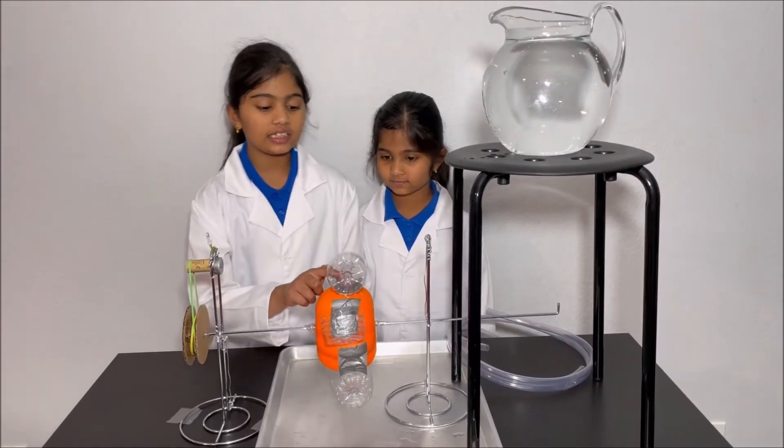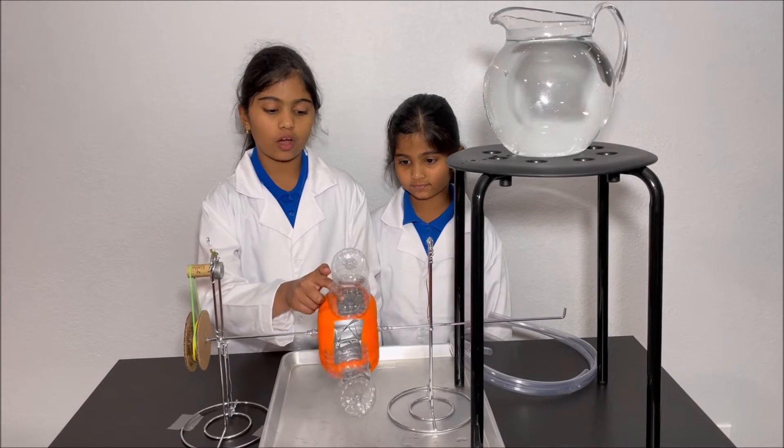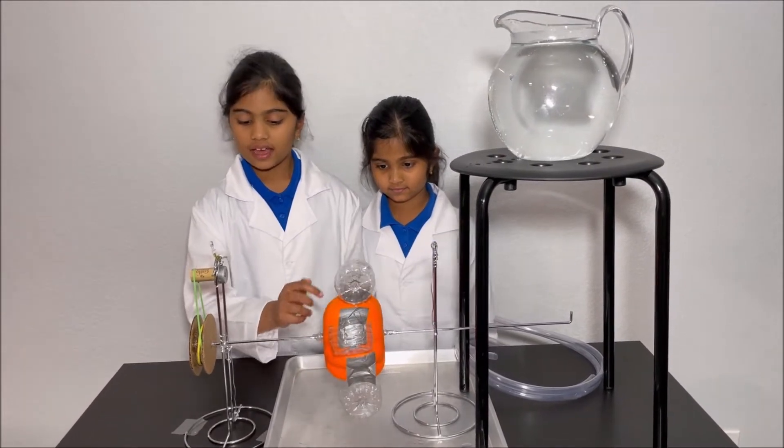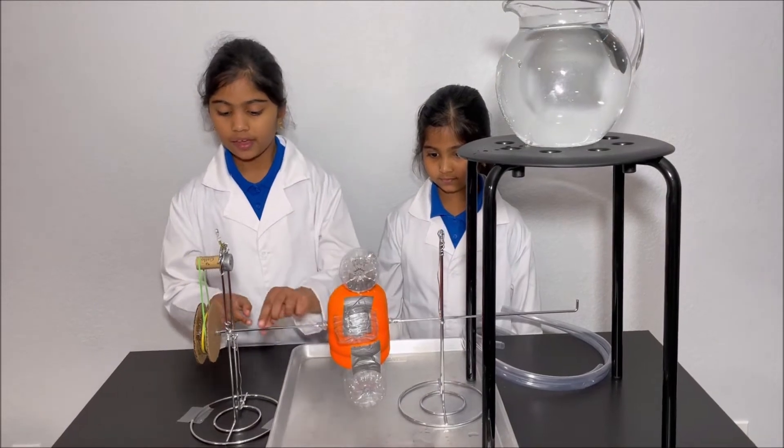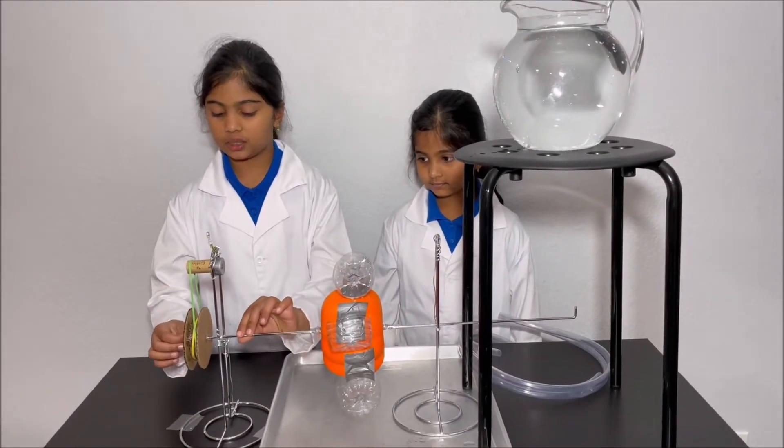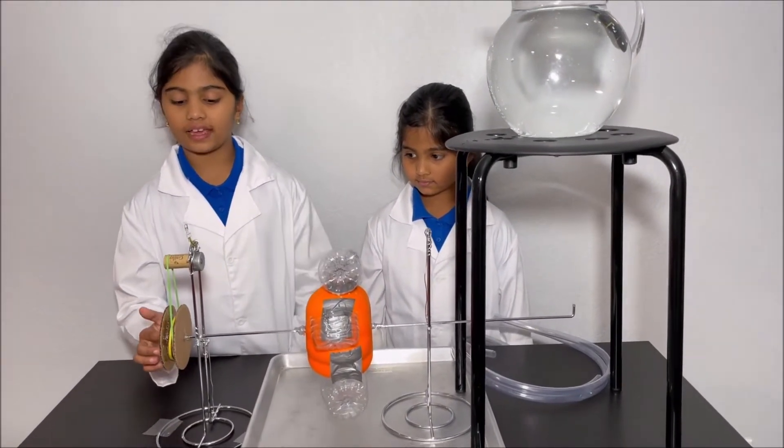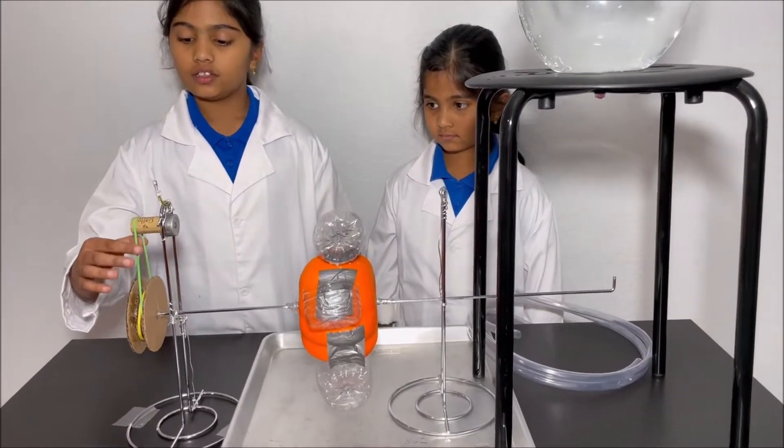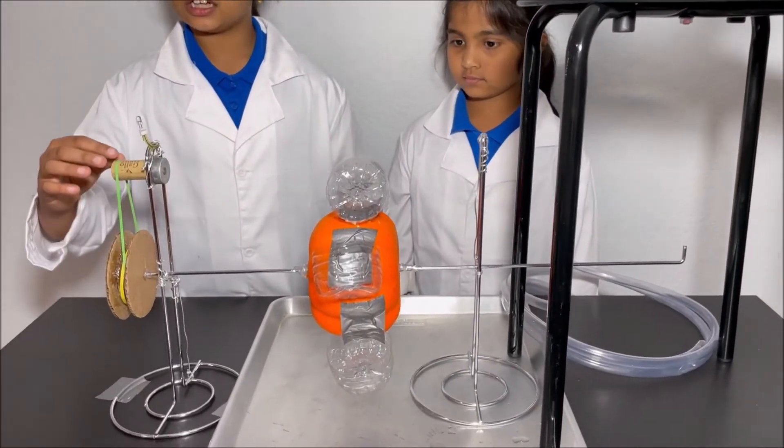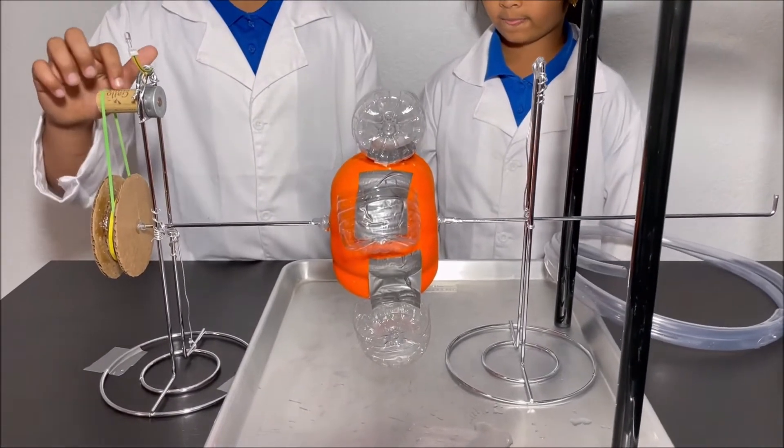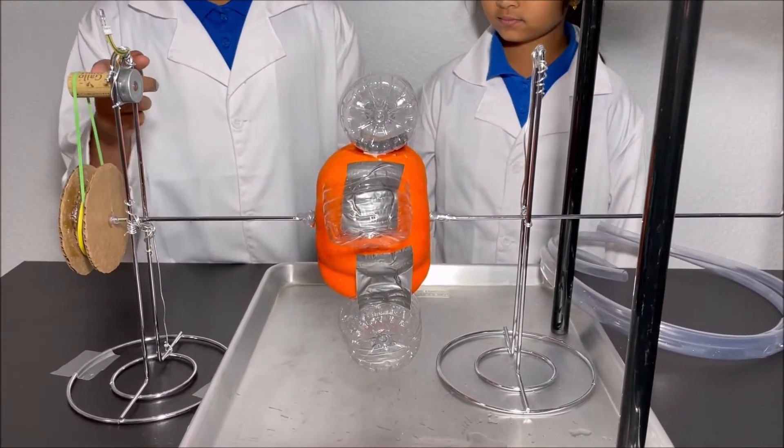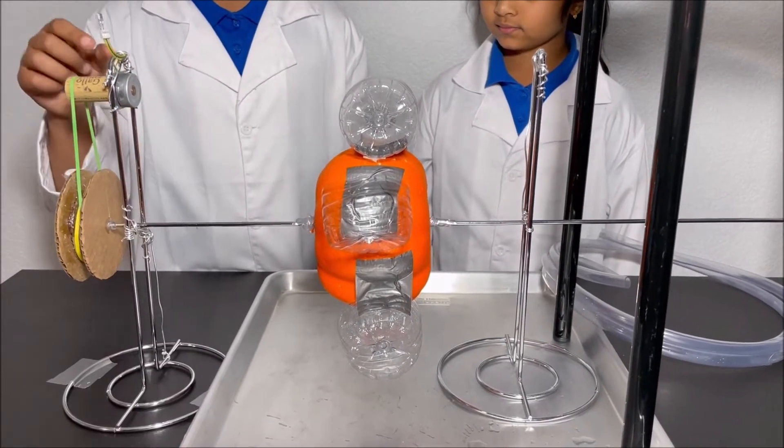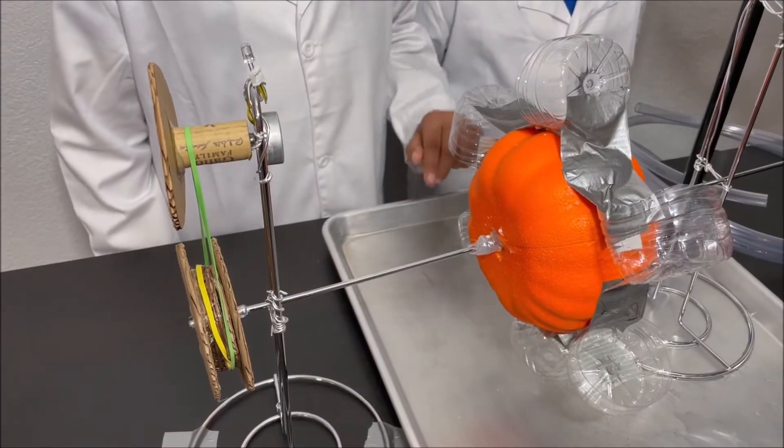So we attach the buckets to the water wheel like this, and we attach the axle to the water wheel, and we attach the pulley to one of the ends of the axle. Then we took a rubber band and attached one of the ends of the rubber band to a cork, and we attach the cork to the shaft of the generator. Now I'm going to show you how it works.